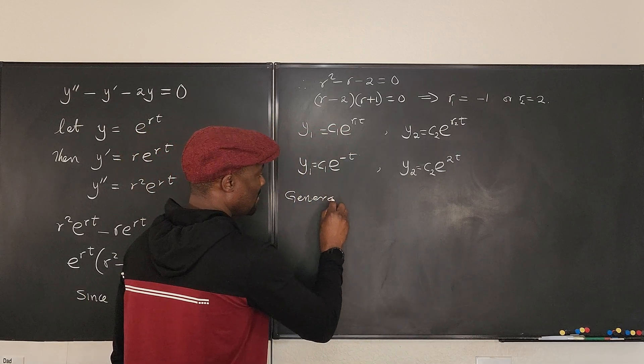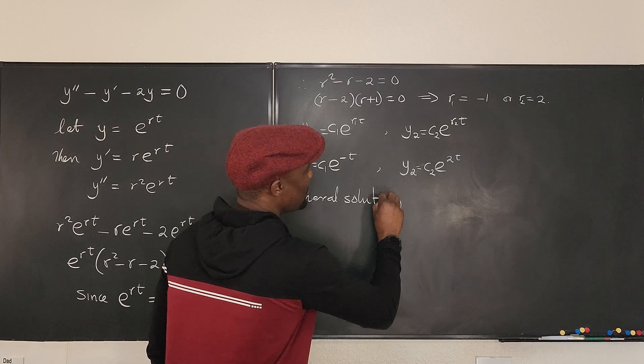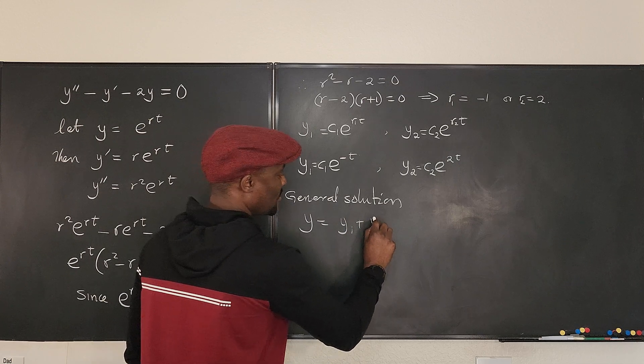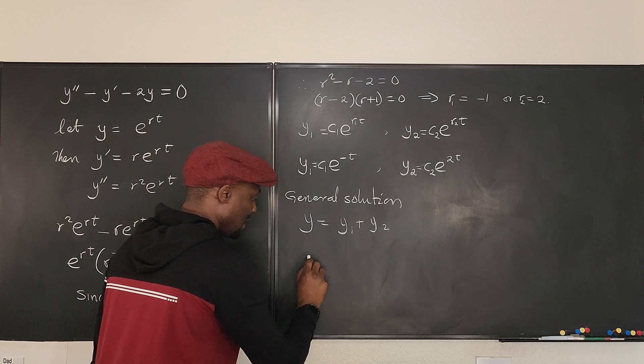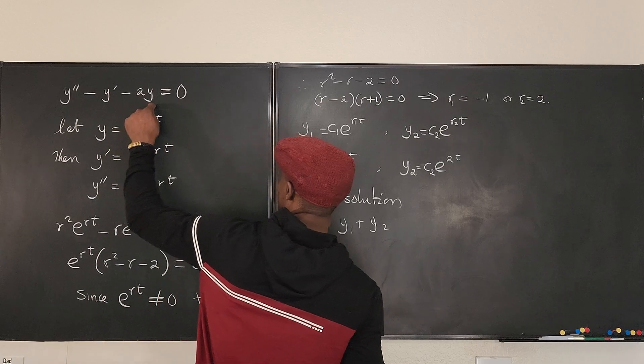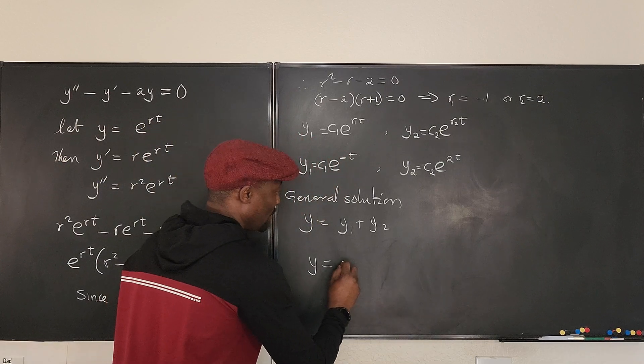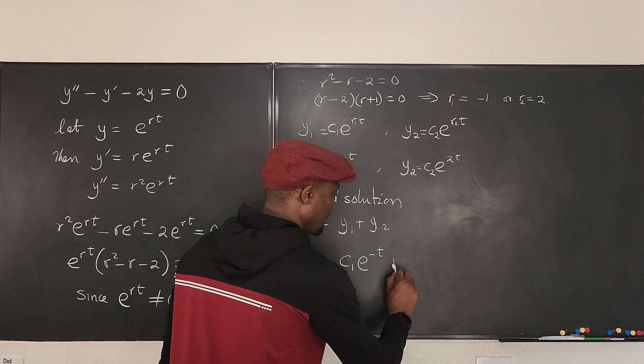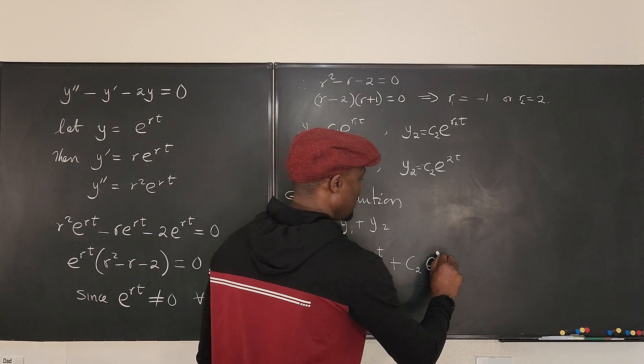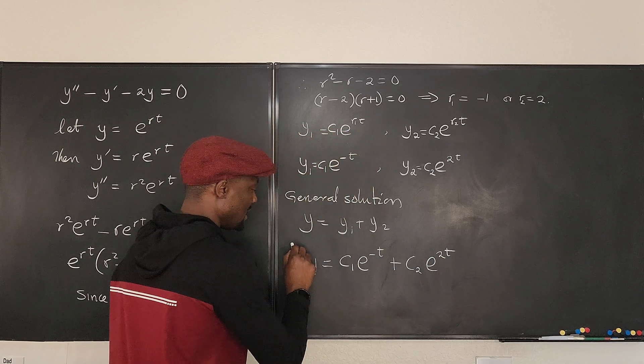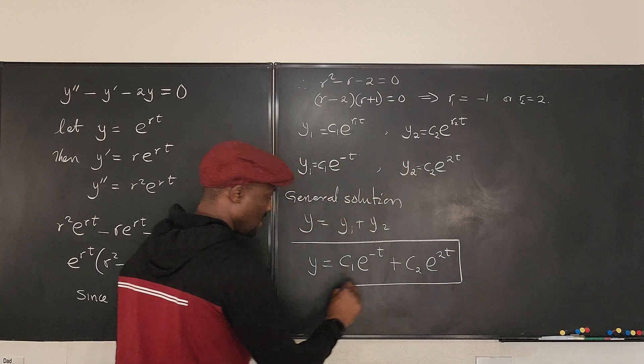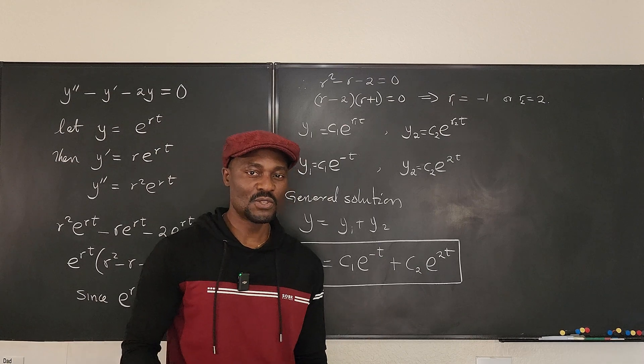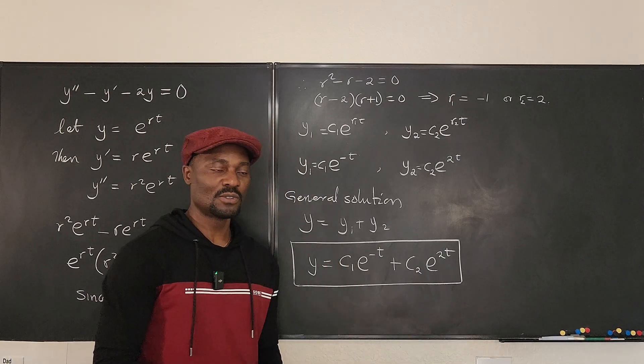So general solution will be the sum of both of them, which is going to be y equals y₁ + y₂, which implies that y, this y that formed this whole thing, is equal to c₁e^(-t) + c₂e^(2t). And this is the general solution. If we got more information, we could actually evaluate what c₁ and c₂ are, but right now we're just going to stick to the general solution.